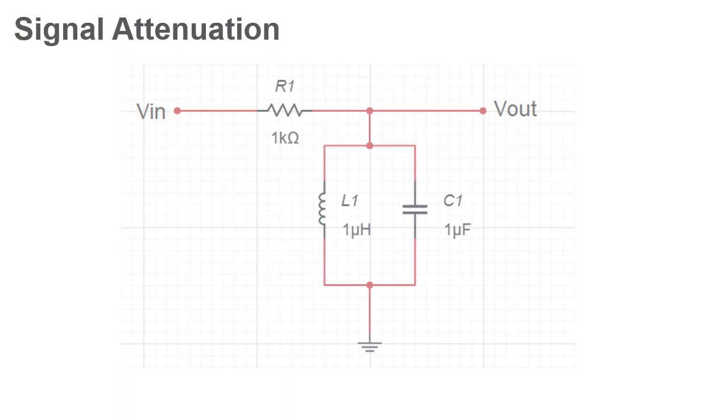The filter functions much like a voltage divider with two impedances, Z1 from the resistor, and Z2, the combined impedance of the LC tank, or parallel circuit. The output of the voltage divider is equal to the voltage drop across Z2, the tank circuit, which is equal to V equals IZ.